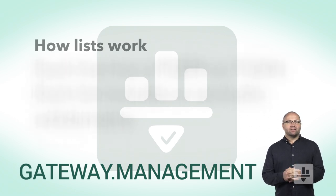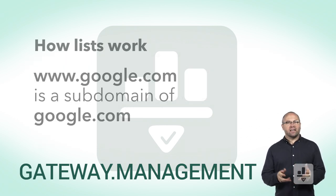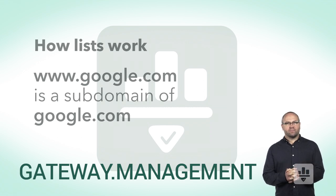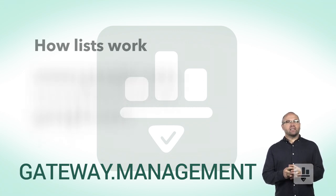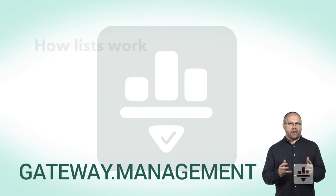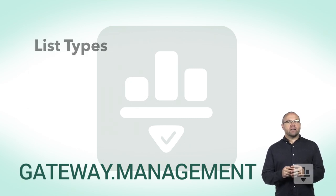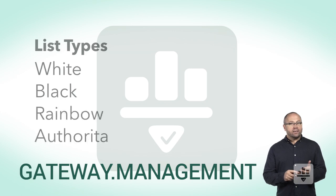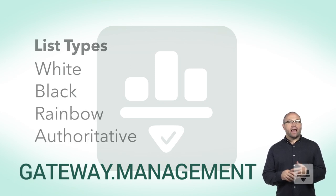For example, www.google.com is a subdomain of google.com. Each list in its entirety also has a type attribute that determines how it is applied. The types are white, black, rainbow, and authoritative lists.